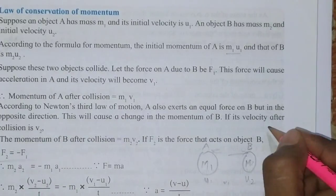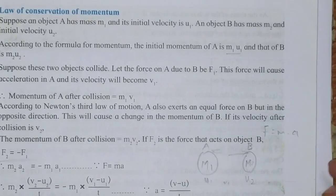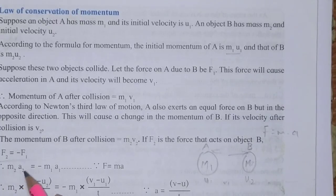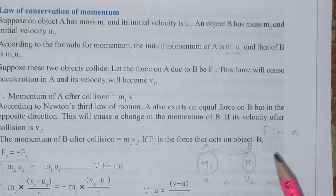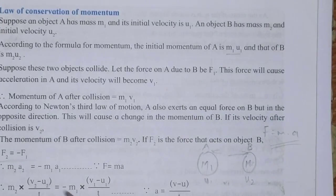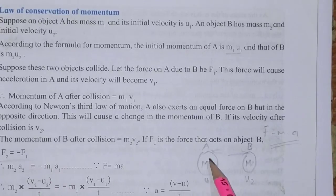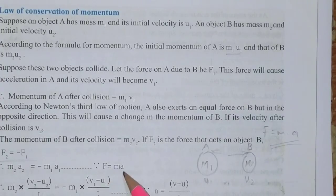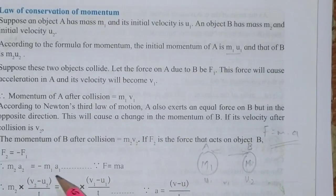We know that the formula for force is mass into acceleration. So for F2, the mass is M2 and the acceleration is A2, because this is for the second object. Therefore F2 = M2 × A2. For F1, since the force is exerted on mass M1 (object A), F1 = M1 × A1. Since F = MA, we substitute: M2 × A2 = −M1 × A1. The same formula — force equals mass into acceleration — has been applied and values substituted accordingly.